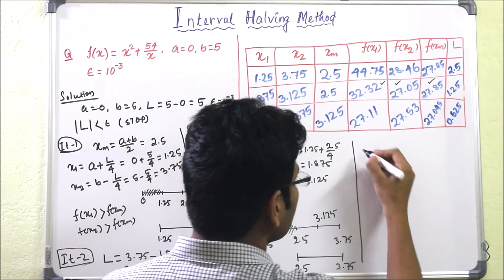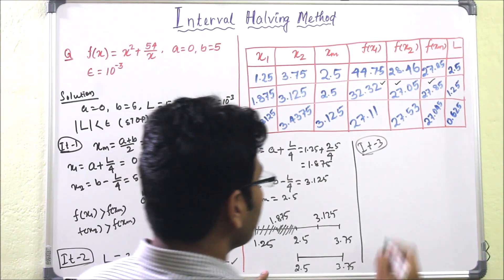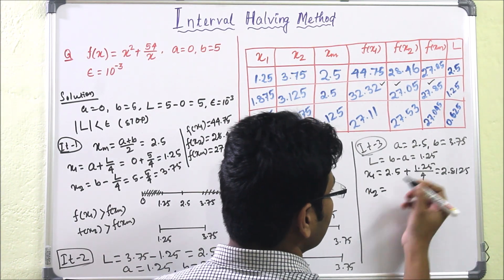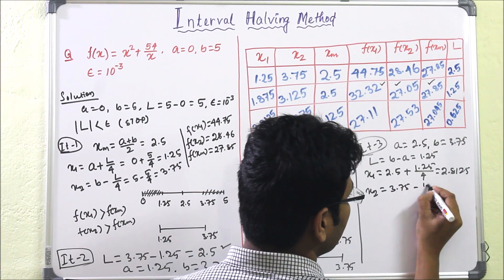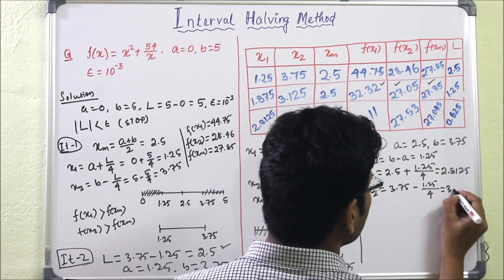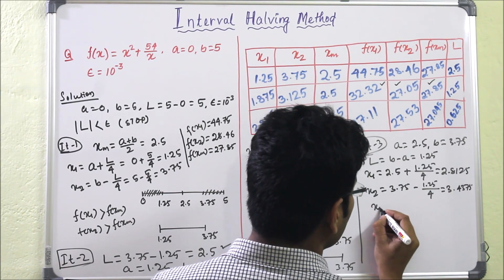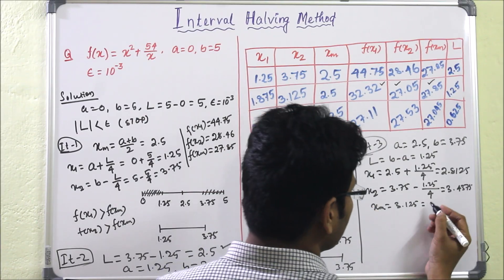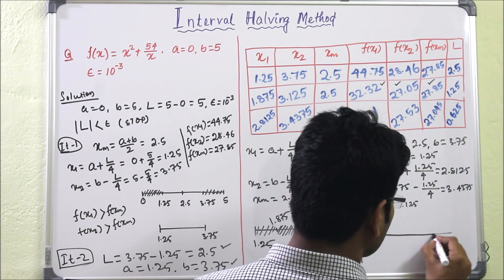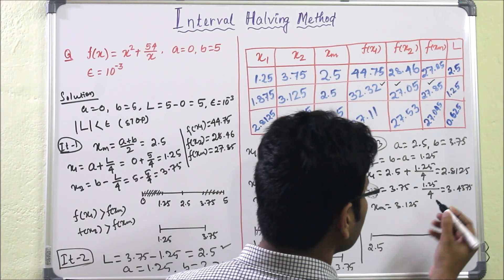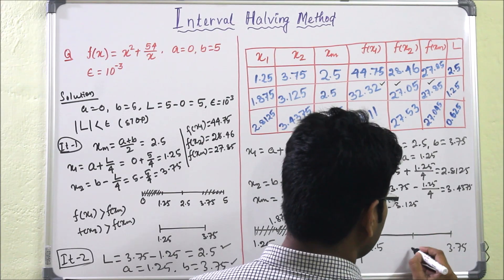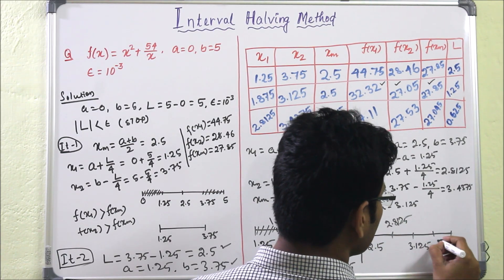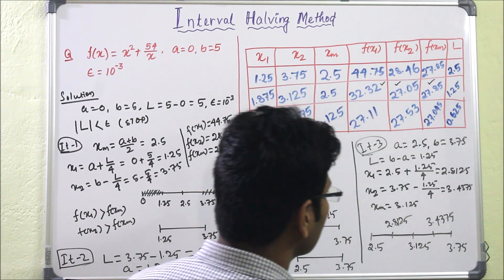For Iteration 3, a = 2.5 and b = 3.75. We compute x2 = b − L/4 = 3.75 − 1.25/4 = 3.4375. The midpoint xm = (a + b)/2 = 3.125. So we have a = 2.5, b = 3.75, xm = 3.125, x1 = 2.8125, and x2 = 3.4375.